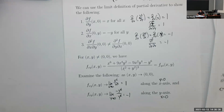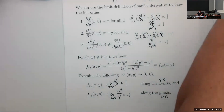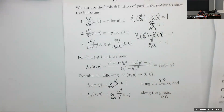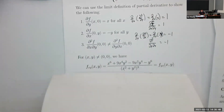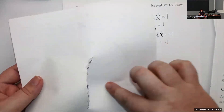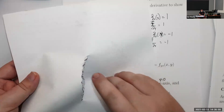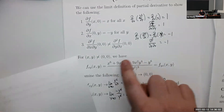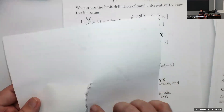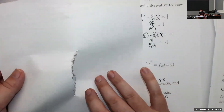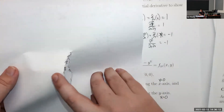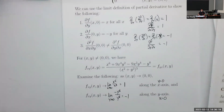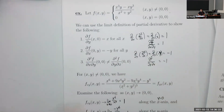A way of imagining this: the function looks like something where if you approach one way you head toward −1, and a different way you head toward a different value. The moral of the story is that except for a few weird functions like this, you can take your derivatives in any order.